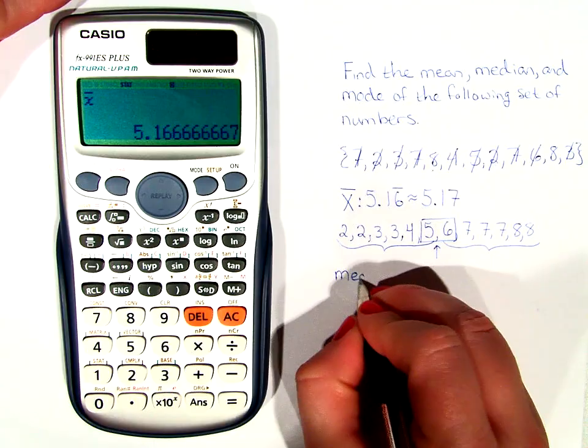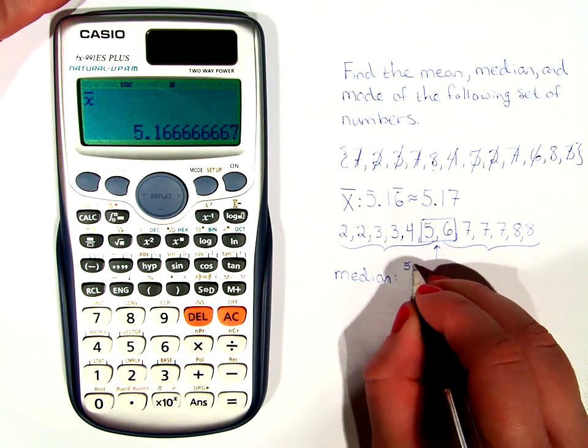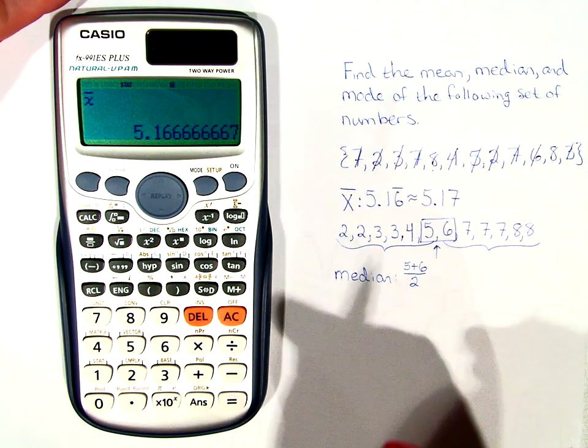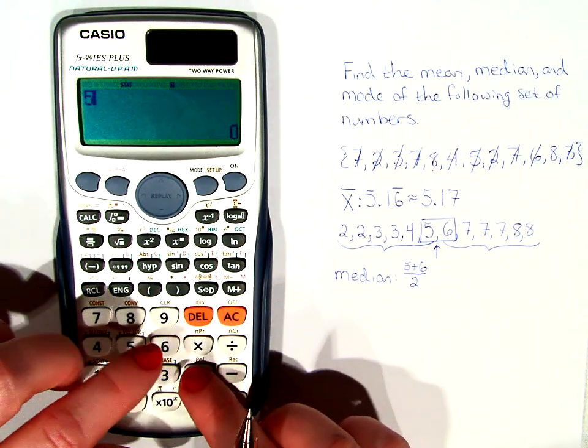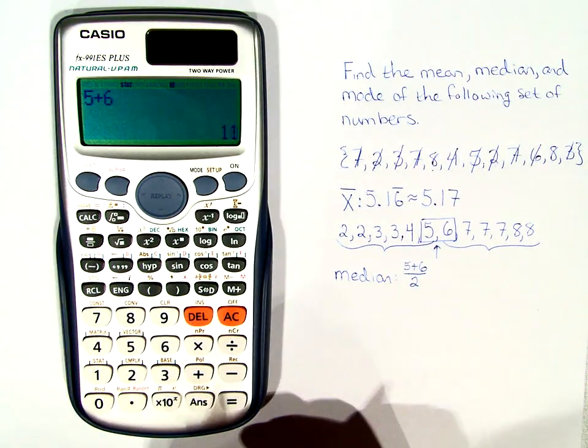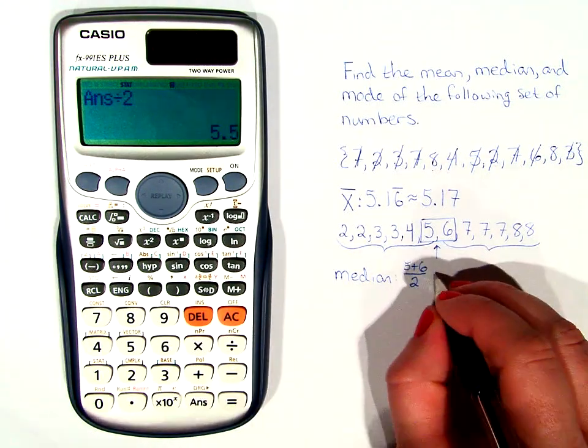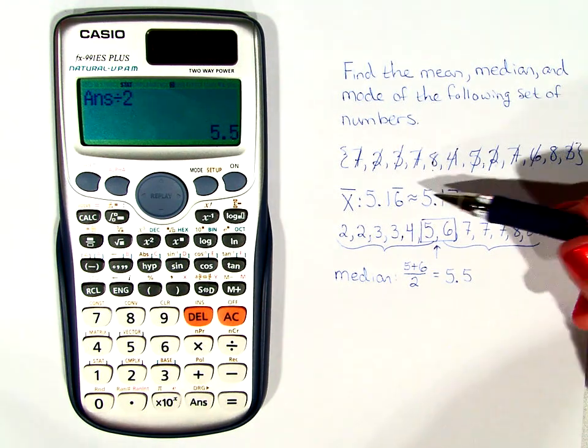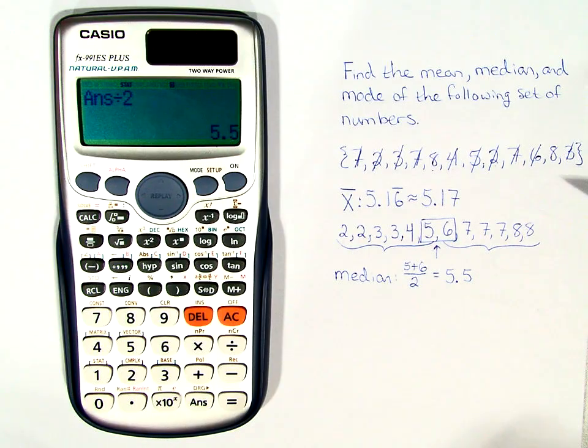So to do median, we're going to say 5 plus 6 divided by 2. And for that you can use the calculator if you need to. 5 plus 6 equals 11. We divide that by 2, and we get that the median is 5.5. And if you notice, the median is pretty close to the mean, and that's what we expect, and that's honestly what we want with our data.